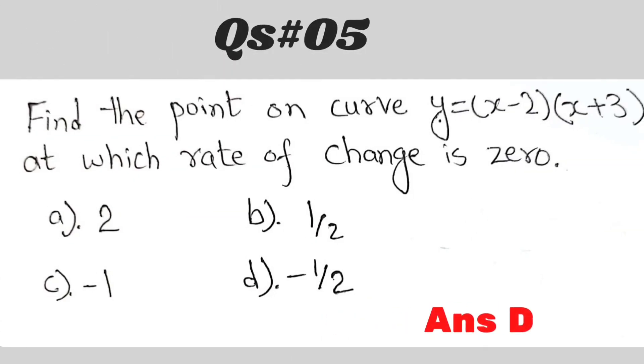Question number 5: find the point on the curve y = (x - 2)(x + 3) at which rate of change is 0. The answer is D. Now we check its solution.